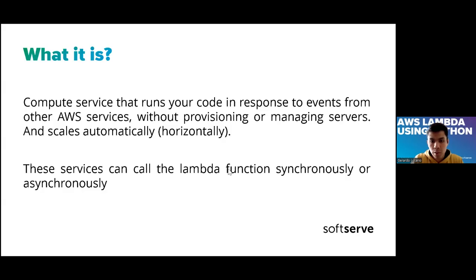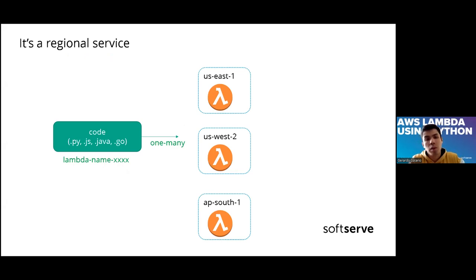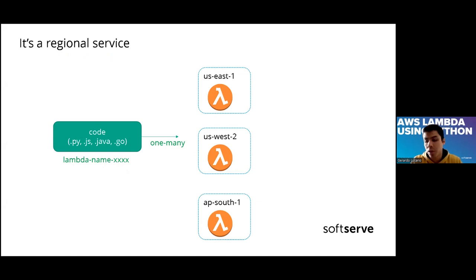We have these two options. This service is a regional service, which means that you can deploy your code — the same code — in many regions. Every region is a bunch of data servers, so if one region goes down, you can deploy your code in another region.